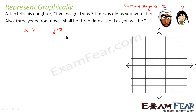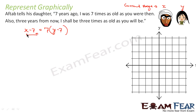Seven years ago, Aftab was x minus 7 years and his daughter was y minus 7 years. But what does Aftab tell? Aftab tells that he was seven times as old as his daughter at that point of time. So, seven years back the ages were x minus 7 and y minus 7 respectively.